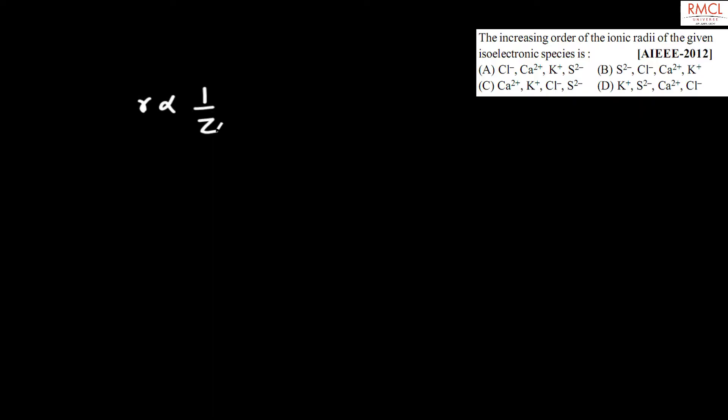So z is atomic number. Cl minus, then Ca plus 2, then K plus, and S minus 2.